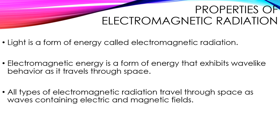We are going to move on from unit 4 and the unit we're going to study will look at the structure of electrons. To understand this we have to talk about light and energy to understand electrons and their behavior with the electron cloud model. Light is a form of energy called electromagnetic radiation. Another form of electromagnetic radiation is gamma rays from nuclear decay.